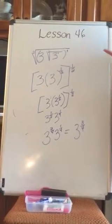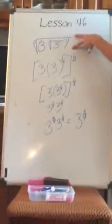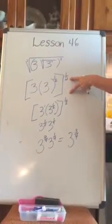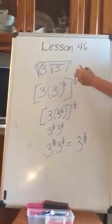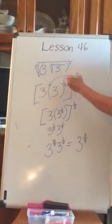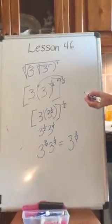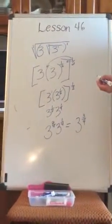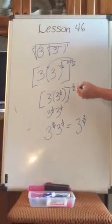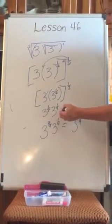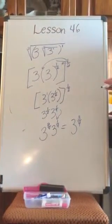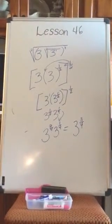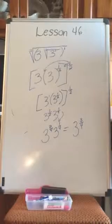To summarize the steps: first, convert the radicals and replace them with fractional exponents. Then distribute the exponent to all terms by multiplying your exponents. Next, find a common denominator for all of the exponents, and then add them. Always work from the inside out.